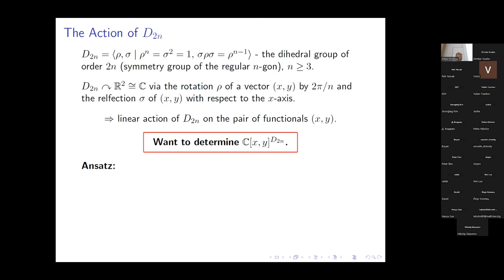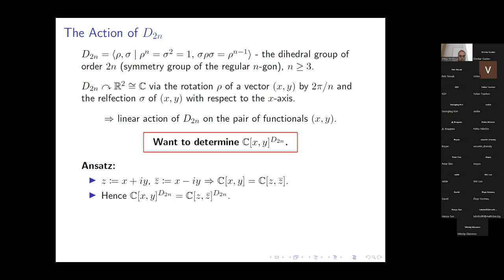We are working with a complexified version of the problem setup, working with complex coefficients. We perform a simple substitution: introduce a formal variable z = x + iy and its formal conjugate z̄ = x - iy. Since this is an invertible transformation, the rings are the same and the invariants will be the same. Having introduced complex coordinates, we can state the action very concisely. Let ζ = e^{2πi/n} be a primitive nth root of unity. Then rotation acts by z ↦ ζz and z̄ ↦ ζ⁻¹z̄. Reflection swaps z and z̄ — it sends z to z̄ and z̄ to z.